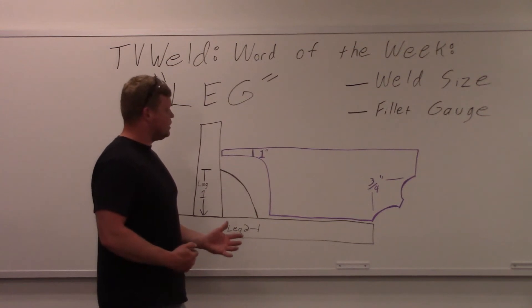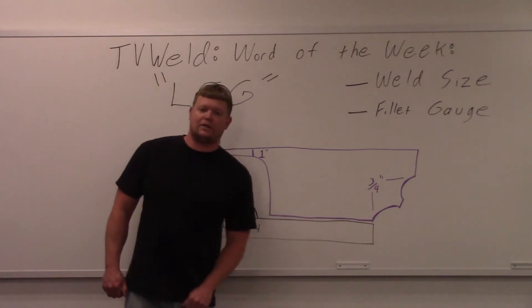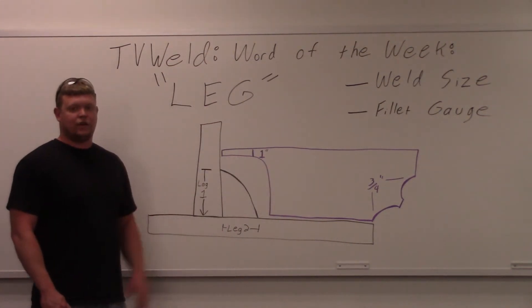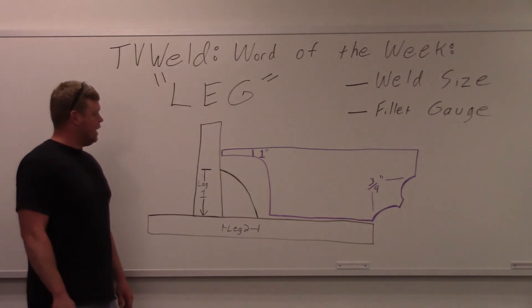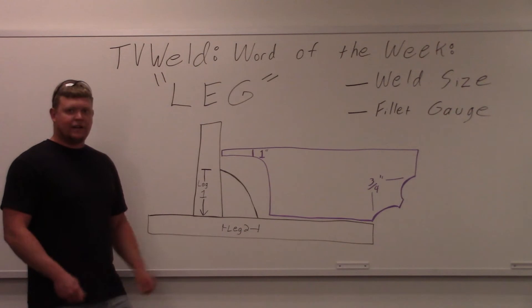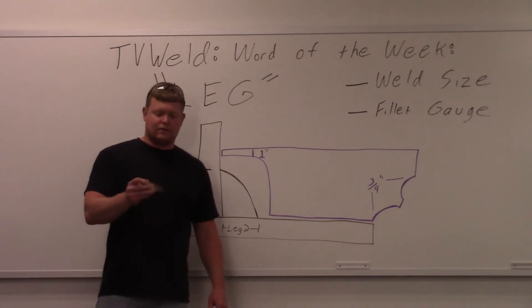Usually they want it to be at least a little bit convex on a fillet weld, so that's what that side of the fillet gauge is measuring. What we'll do now is we'll take a look at that fillet weld and we'll measure the uneven legs on it using our fillet gauge.